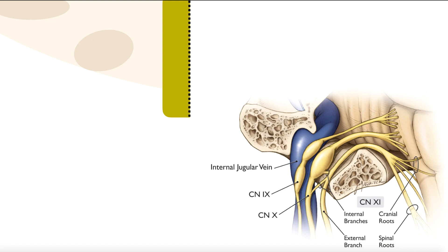The vagus nerve is arguably and easily the most complicated of all 12 cranial nerves because its functions are so widespread. Most of the cranial nerves have functions that really just extend down to the neck. The vagus nerve includes the neck, the thorax, the abdomen, and a little bit of the pelvic cavity. So it's fairly complicated — we're going to break it up into several videos.